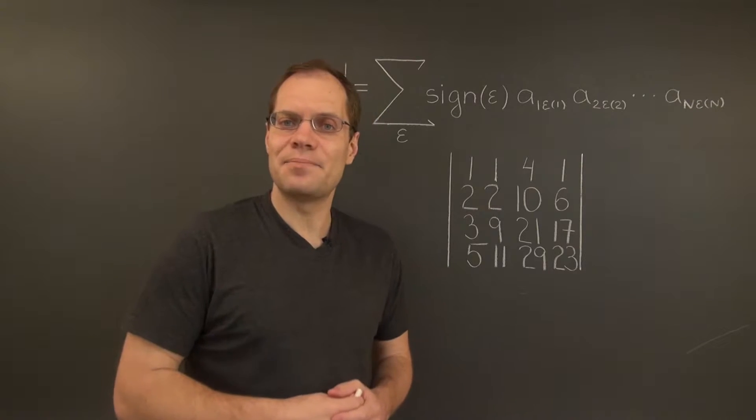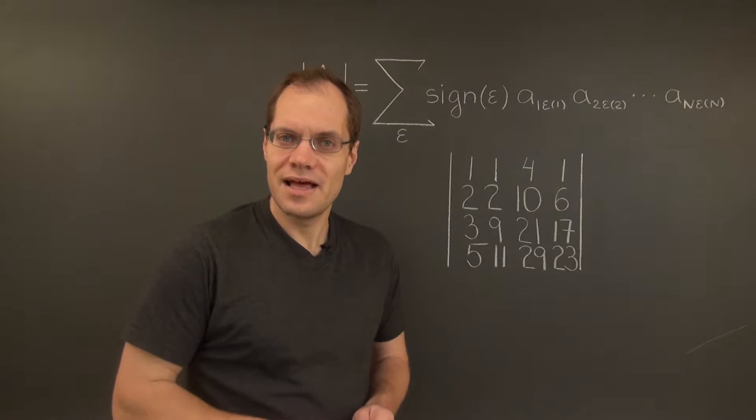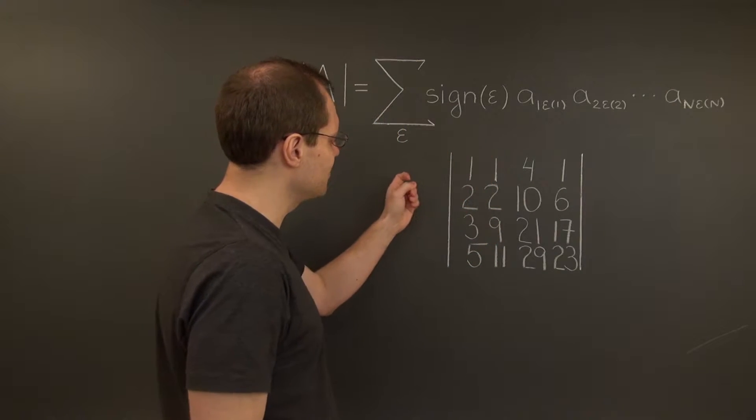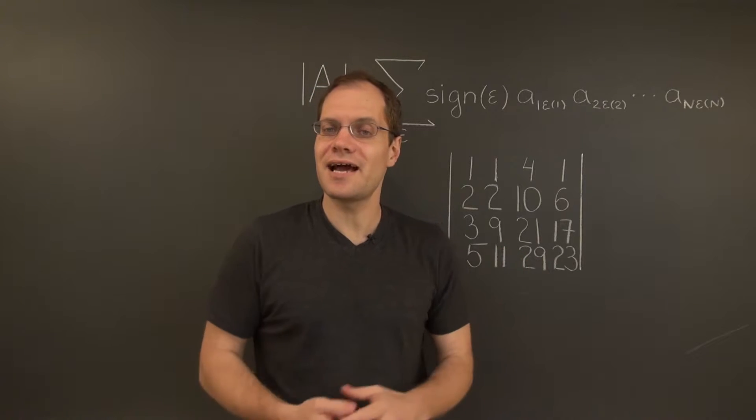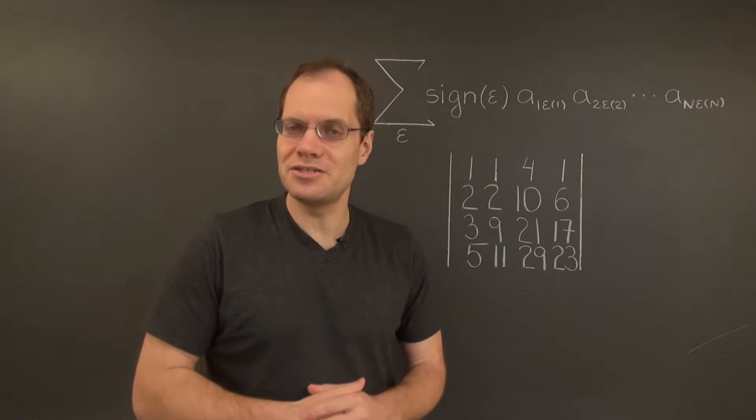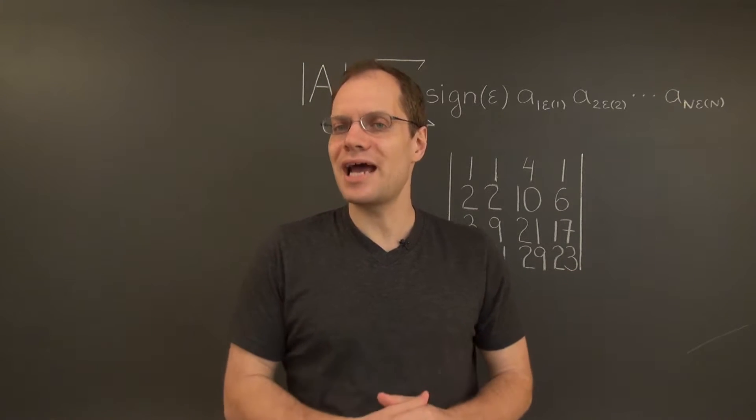Let's consider another example of calculating a determinant by Gaussian elimination. And in this example, as you might anticipate by looking right here, we will necessarily have to switch rows if we insist on ending up with a triangular matrix. So let's proceed with Gaussian elimination and see what happens.